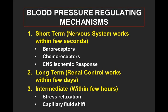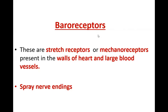Short-term mechanisms act within seconds but their action lasts for a few seconds. The long-term mechanism is mainly kidney control — it can control blood pressure for nearly hours to days. Intermediate mechanisms can regulate blood flow and maintain it normal for a few minutes or hours. First, we will see mainly the baroreceptors.